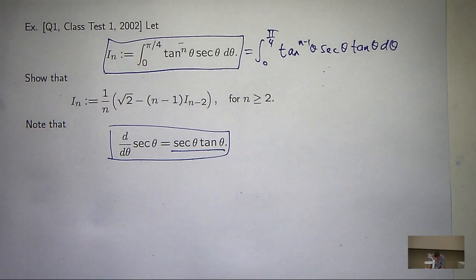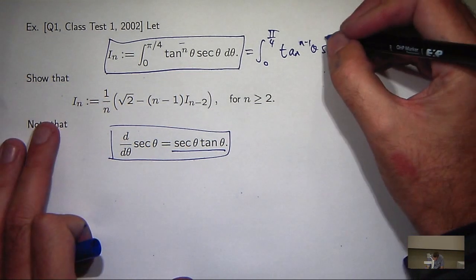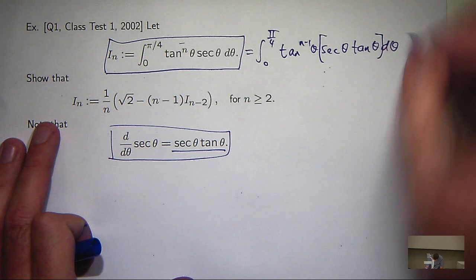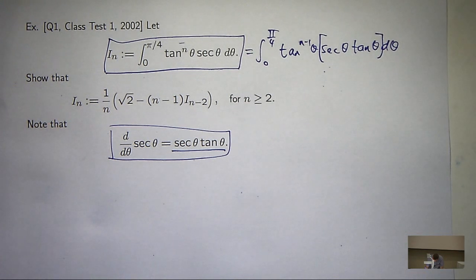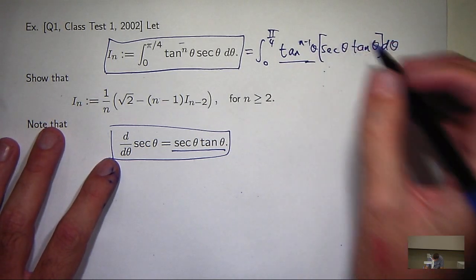So again, I'm just going to integrate by parts. And hopefully, hopefully, I get what I'm looking for. So I'm going to let this be u and this be v dash.